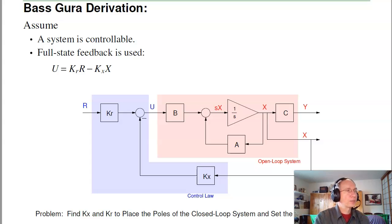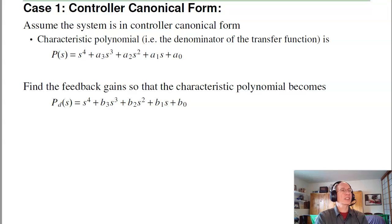So with those definitions, we can start into Bass Gura. Let's assume my system's controllable. Let's assume that all n states are measurable. I'm going to use full state feedback, U is minus KX times X, to place the poles wherever I want. The challenge, though, is how do you find KX? Well, let's look at a couple cases. Let's assume the system's in controller canonical form.